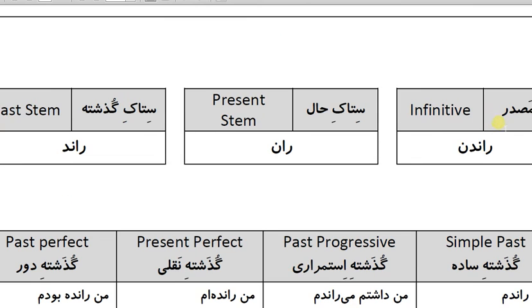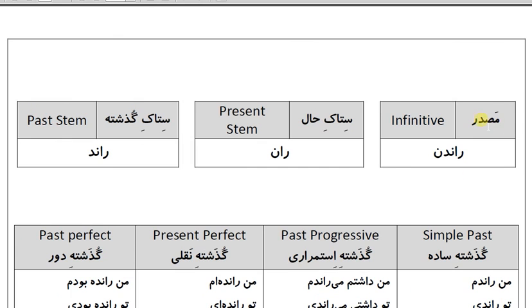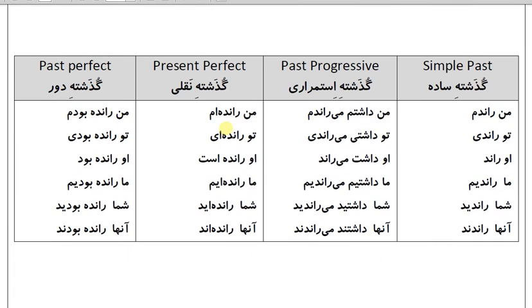Next page. مصدر (infinitive): راندن. ستاک حال (present stem): ران. ستاک گذشته (past stem): راند. گذشته ساده (simple past): من راندم، تو راندی، او راند.